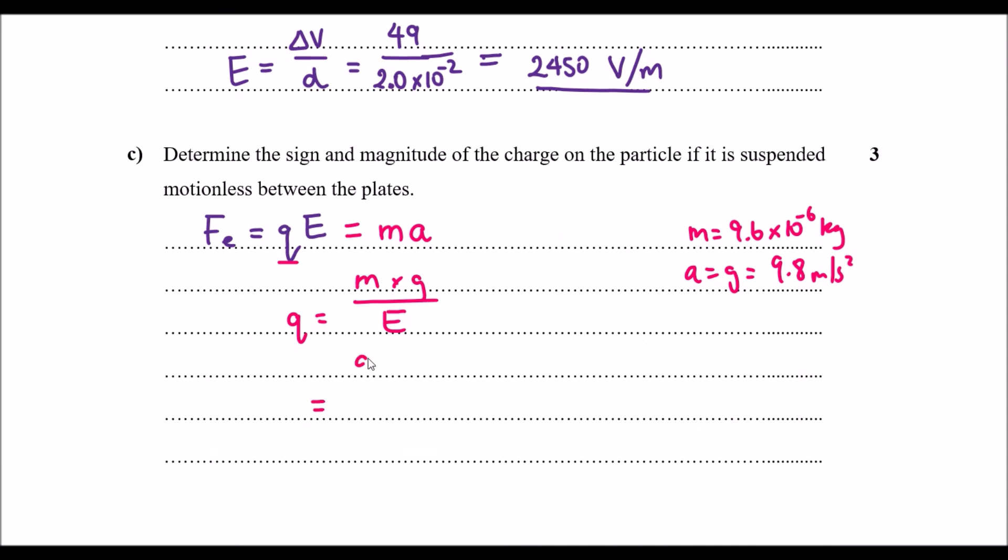M will be 9.6 times 10 to the power of negative 6. Multiply that by 9.8. And we divide it by our electric field strength. Let's see what the charge is. So it is, let me just redo that.